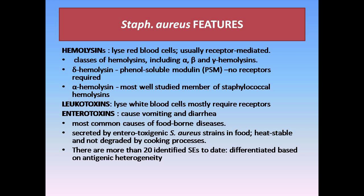Hemolysins are toxins that lyse red blood cells and their action is usually receptor-mediated. There are many classes of hemolysins, including alpha, beta, and gamma hemolysin. Alpha hemolysin has been classified as a phenol-soluble modulin (PSM) that does not require a receptor for its hemolytic activity.